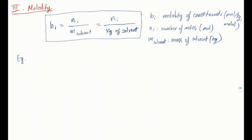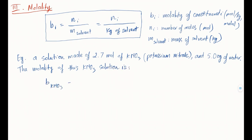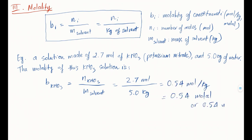For example, this solution is made of 2.7 moles of potassium nitrate KNO3 and 5 kilograms of water. So the molality of this potassium nitrate solution is 2.7 moles divided by 5 kilograms, equal to 0.54 moles per kilogram or 0.54 molal. The symbol is little m.